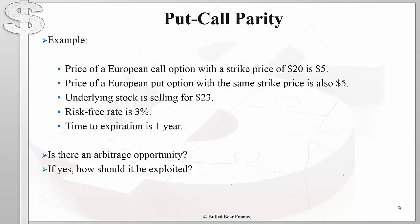Here's an example. The price of a European call option with a strike price of $20 is $5. The price of a European put option with the same strike price is also $5. Suppose the underlying stock is selling for $23. The risk-free rate is 3% and the time to expiration is one year.